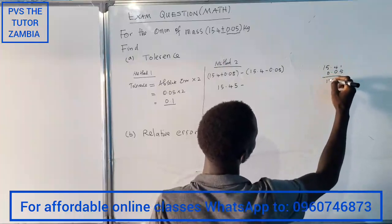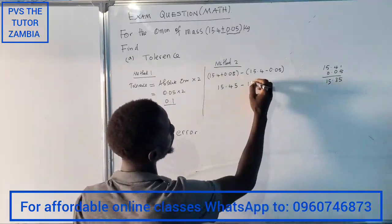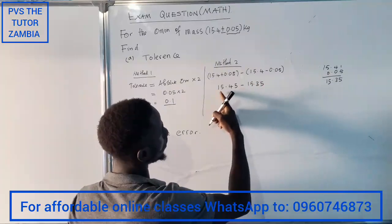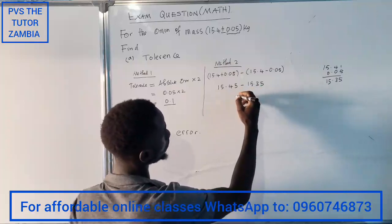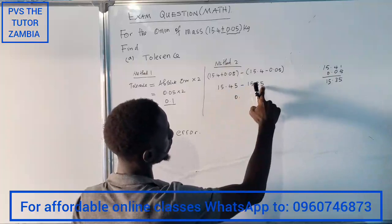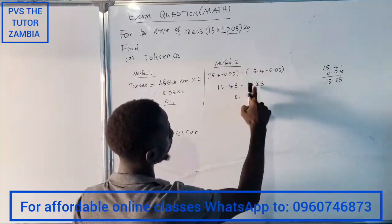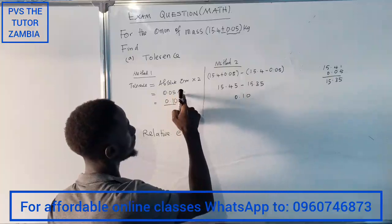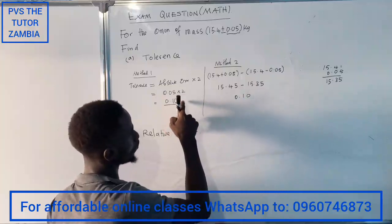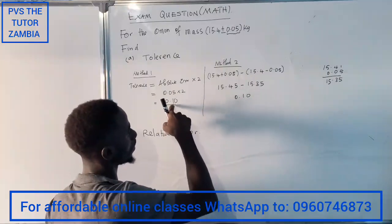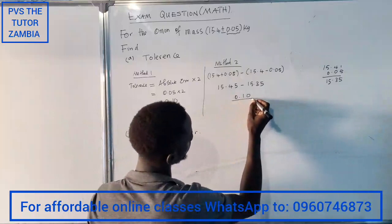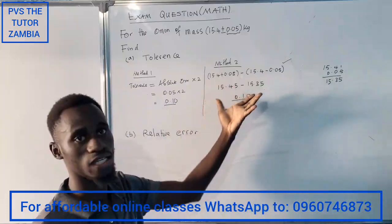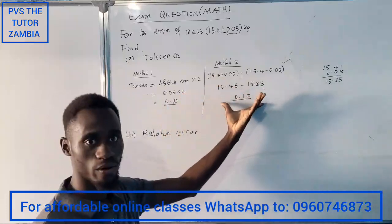Now we subtract these two: 15.45 minus 15.35. The 15 and 15 cancel to zero, and 45 minus 35 gives us 0.1. So we get the same answer as method one. I personally prefer method two because it can earn you more marks, but use whichever method you prefer.